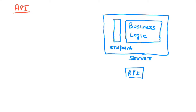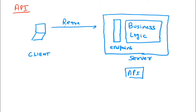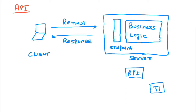Whenever any client needs to invoke your API, the client sends a request to your endpoint. Once the endpoint receives the request, the business logic is invoked on the server and a response is returned back to the client. There are two timing components: t1 is the server execution time — the time taken to execute your business logic — and t2 is the network time, the time for the request to reach the server and the response to come back.